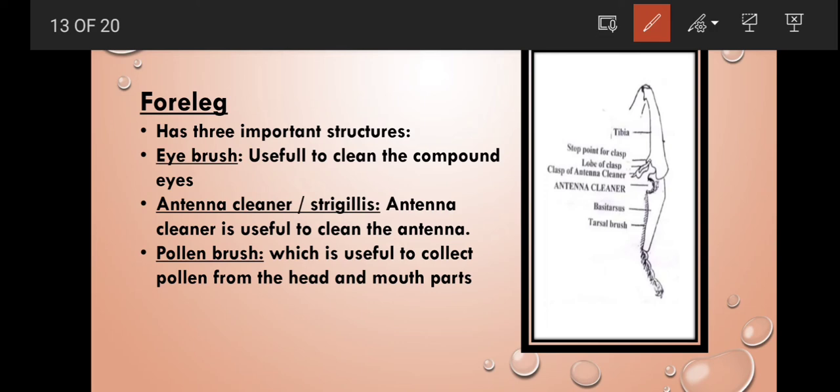There are three pairs of legs which are called foreleg, midleg, and hindleg. Forelegs are present at the prothoracic region. Forelegs has three important structures: one is eye brush and second is antenna cleaner and third is pollen brush. Eye brush is useful to clean the compound eyes and the antenna cleaner is useful for cleaning the antenna. And pollen brush which is useful to collect the pollen from the head and mouth parts.